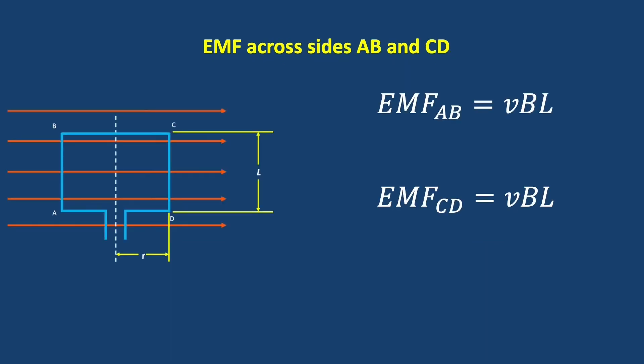In both line segments AB and CD, the EMF being generated is VBL, where V is the instantaneous velocity of that line segment at that time. In the case of AB, that's into the page, and in the case of CD, that's out of the page. B is the magnetic field strength, and L is the length of the piece of wire that is moving, either AB or CD.